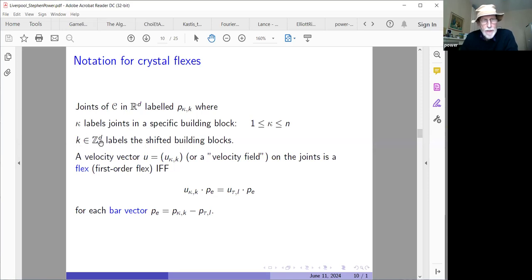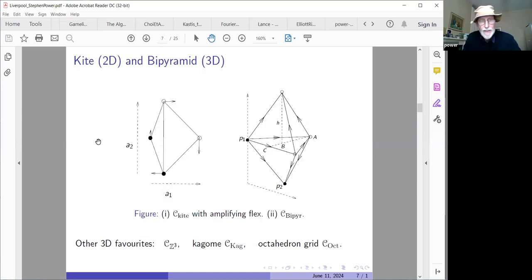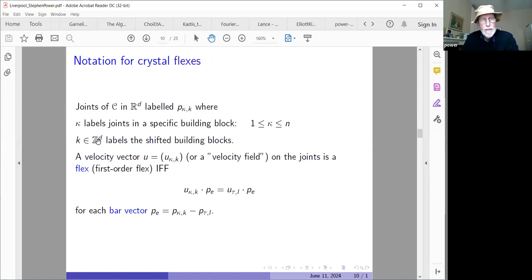So what I'm proposing here is that for my building blocks, I will label the joints by kappa. And let us suppose that there are n joints in this building block. You might imagine it to be a unit cell in a simple example. Now, k is a multilabel. It consists of integers and that corresponds to the translation according to the periodicity vectors. So in two dimensions, there'll be two period vectors. And k, which will be a pair in the case of two dimensions, a pair of integers, labels the shifted base building block. So I've got a dual notation which will locate any joint within the crystal according to how it looks in a typical building block and which building block we're in, kappa and k.